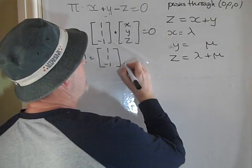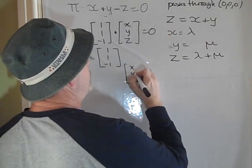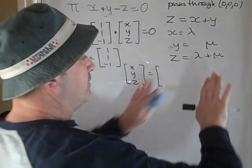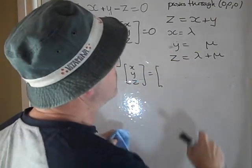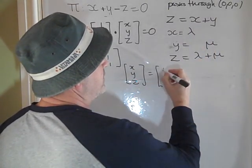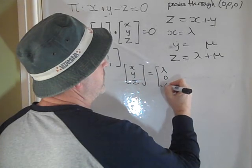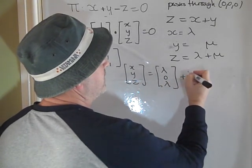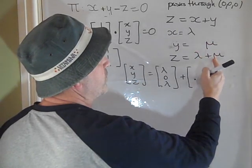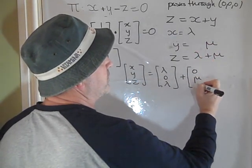So that means that we can write any vector [x, y, z]. We can split the lambdas and the mu's, so you can see that we've got lambda, no lambda, lambda. So it's [lambda, 0, lambda]. And here we have no mu, 1 mu, 1 mu, so it's [0, mu, mu].